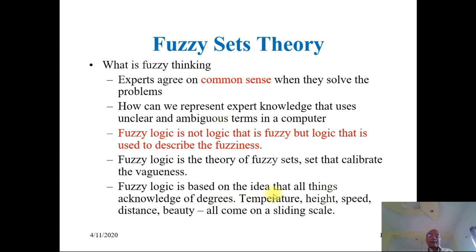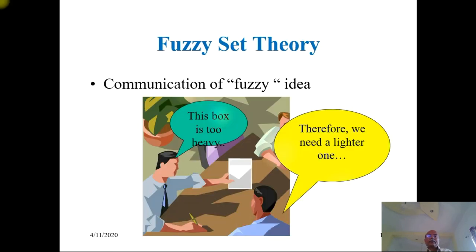Fuzzy logic is based on the idea that all things admit of degrees. Temperature, height, speed, distance, beauty — all come on a sliding scale. For temperature, you may describe it as low, lukewarm, warm, hot, very hot, cold, very cold. For height: tall, mediocre, short. For speed: high speed, low speed, medium speed, normal speed. For beauty: very beautiful, less beautiful, and so on. All come on a sliding scale.